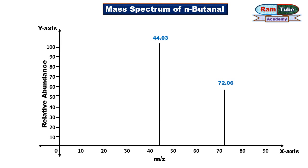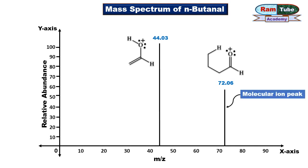In this mass spectrum, you can see a mass peak at 72.06 for the molecular ion of butanal, and the peak at 44.03 is for the fragment ion, that is, the enol radical cation. The rightmost peak or the peak having the highest molecular weight is known as the molecular ion peak, whereas the most abundant ion forms the tallest peak in the mass spectrum, known as the base peak.